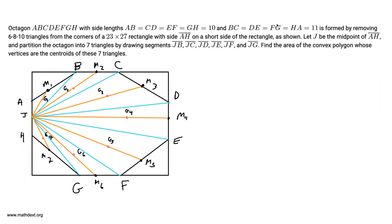The problem reads: octagon ABCDEFGH with side lengths AB equals CD equals EF equals GH equals 10 and BC equals DE equals FG equals HA is equal to 11. It's formed by removing 6-8-10 triangles from the corners of a 23 by 27 rectangle with side AH on a short side of the rectangle as shown.